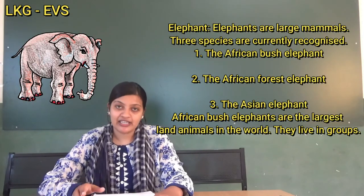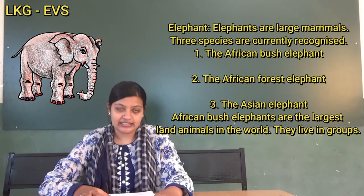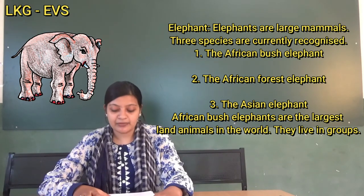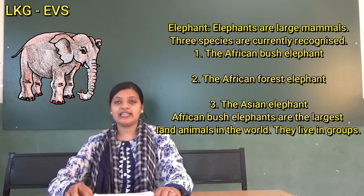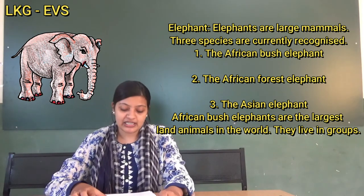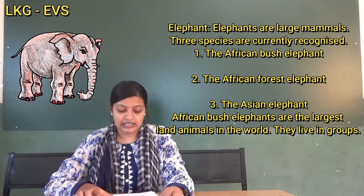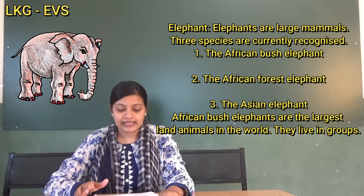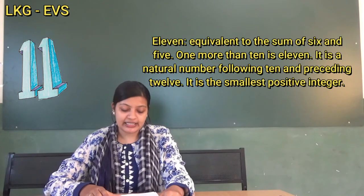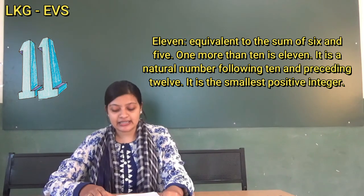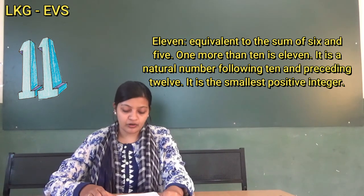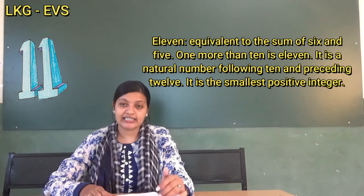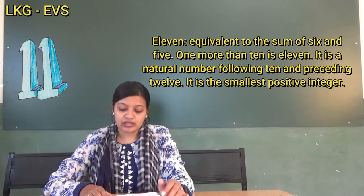Next, we will go with elephant. E-L-E-P-H-A-N-T. Elephant. Elephants are large mammals. Three species are currently recognized: the African bush elephant, the African forest elephant, and the Asian elephant. African bush elephants are the largest land animals in the world and they live in groups. Next, eleven. E-L-E-V-E-N. Eleven: equal to the sum of six and five, one more than ten. It is a natural number following ten and preceding twelve, and it is the smallest two-digit prime integer.